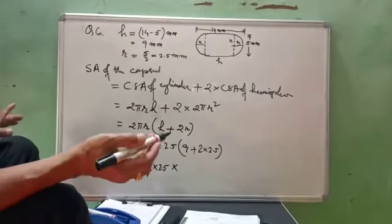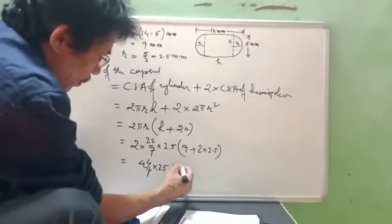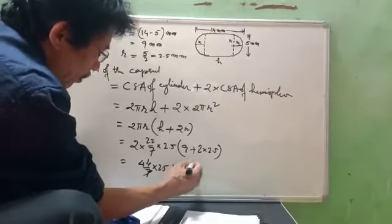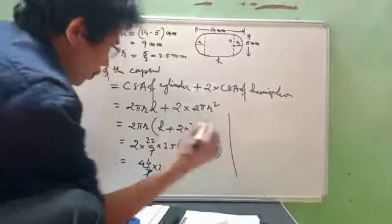Now 2 into 2.5 is 5. 5.05. 5 plus 9 is 14. So 14. Now this 2 can, 7 can cut here. So I'll bring up the remaining solution here.